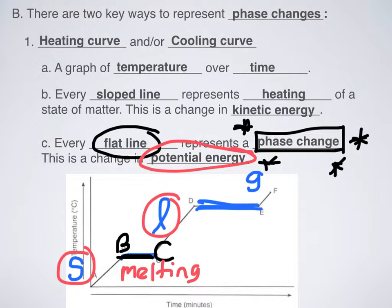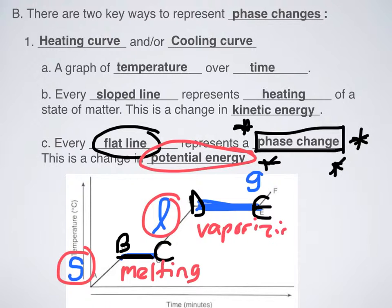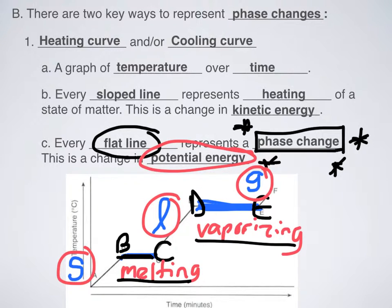What happens when I go from liquid to gas — from D to E — that would be boiling or vaporizing. That would be going from liquid to gas. If I know my states of matter, I can identify when something melts and when something boils or vaporizes. So let's fill in a little bit more information about these graphs.